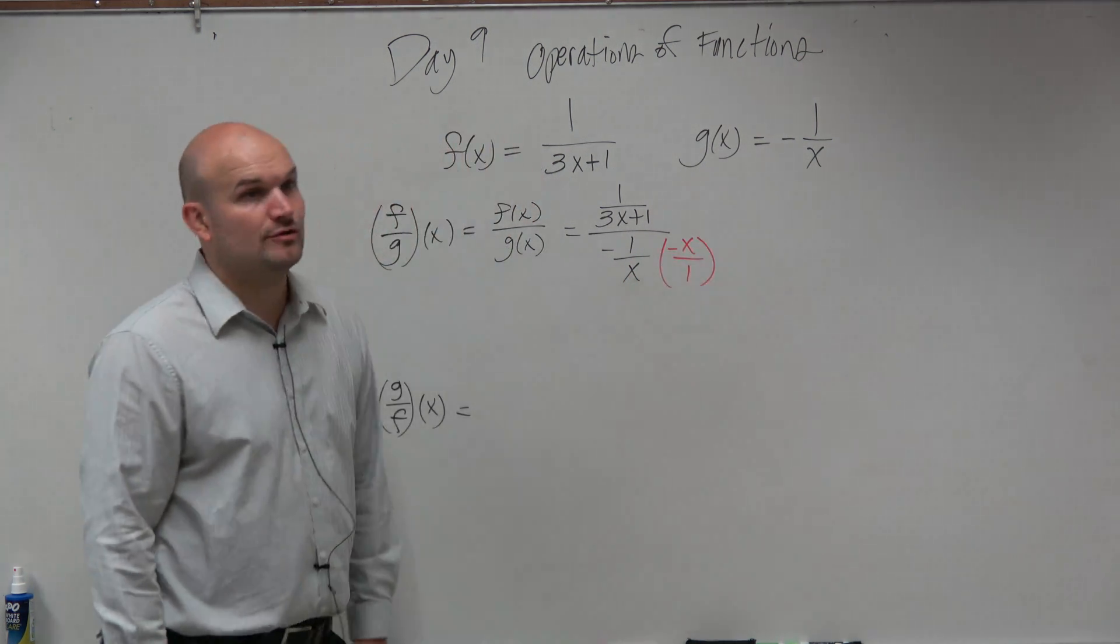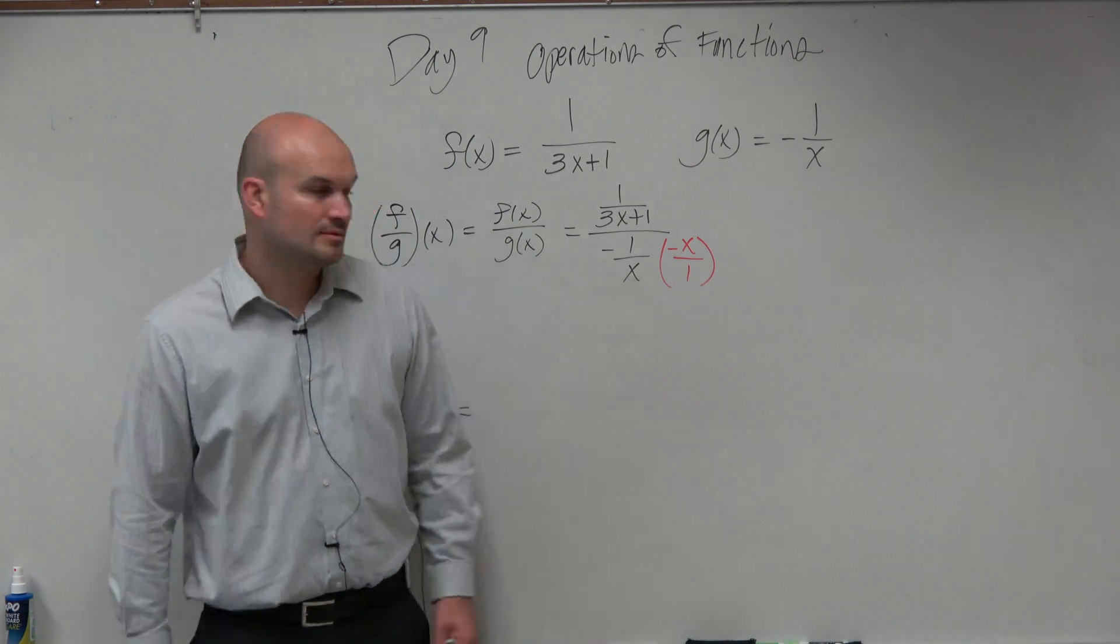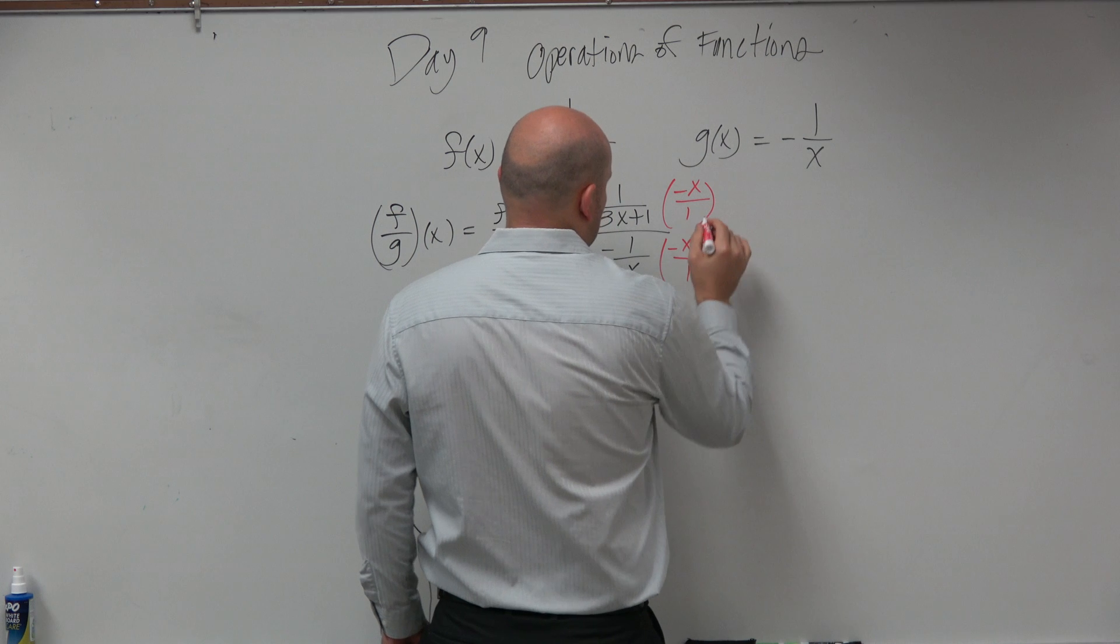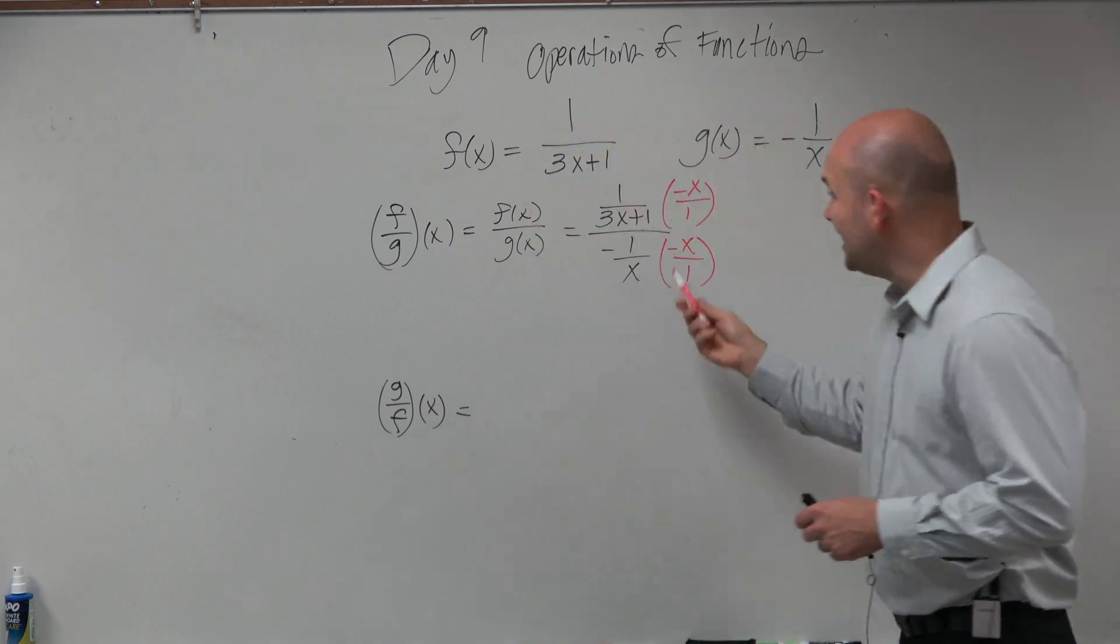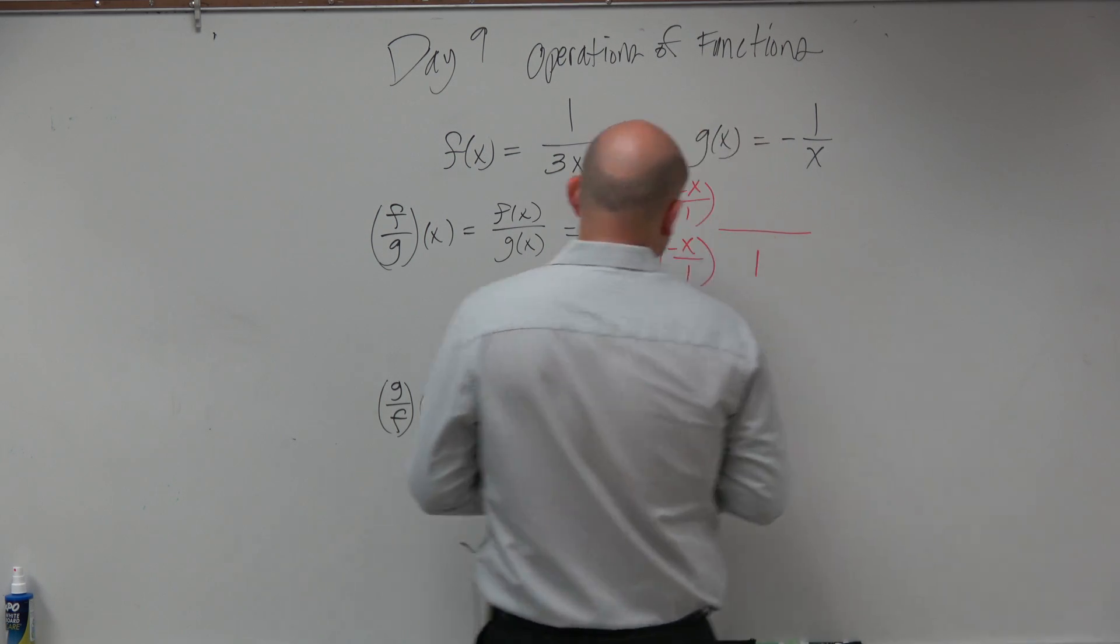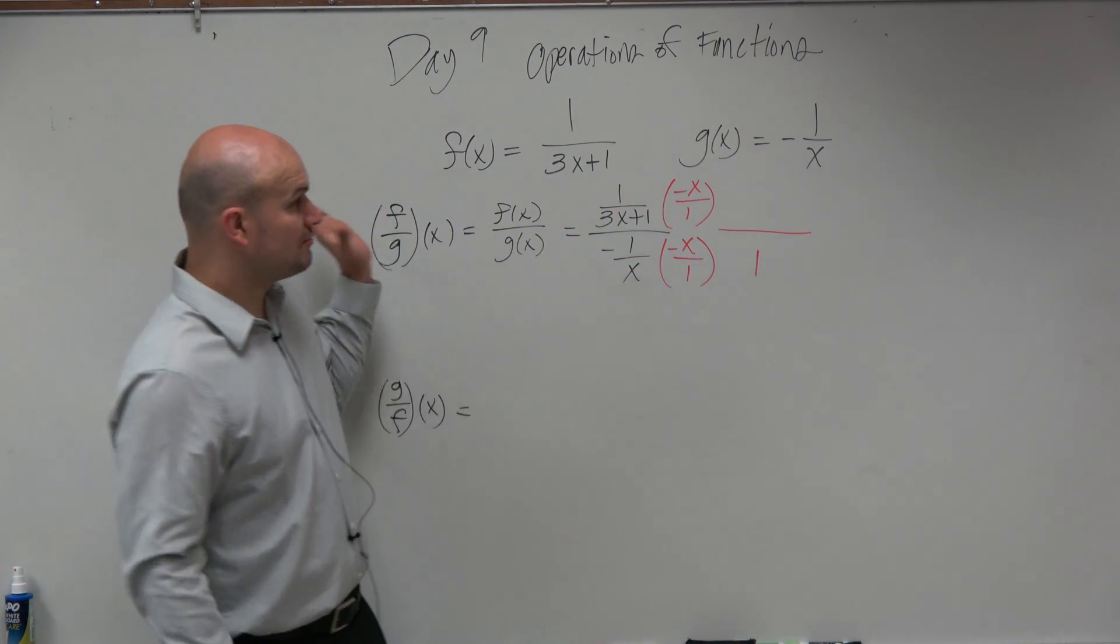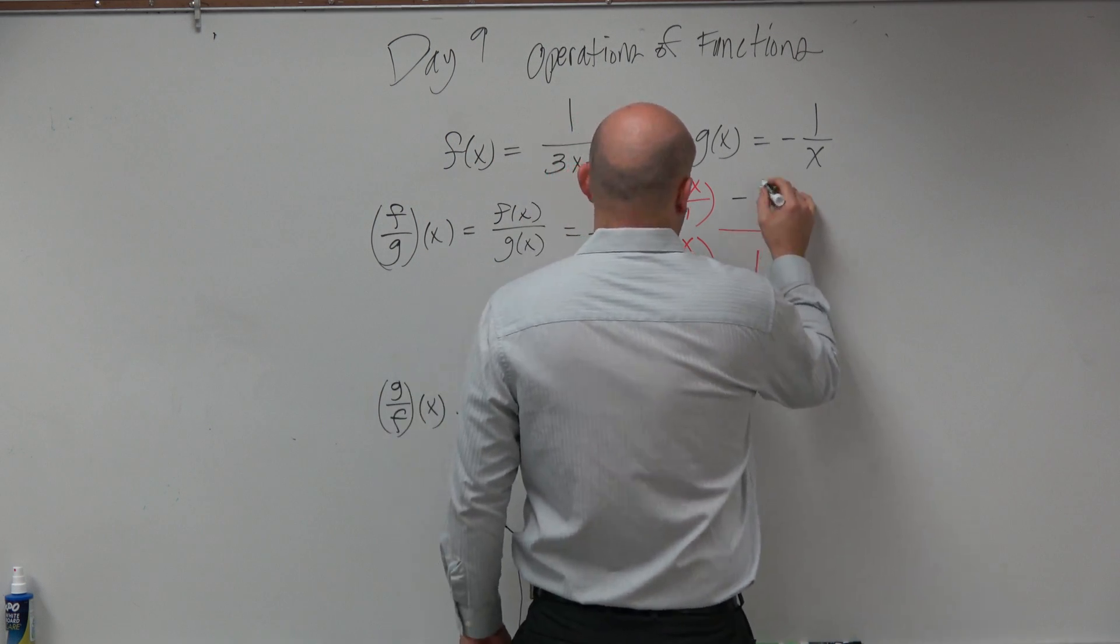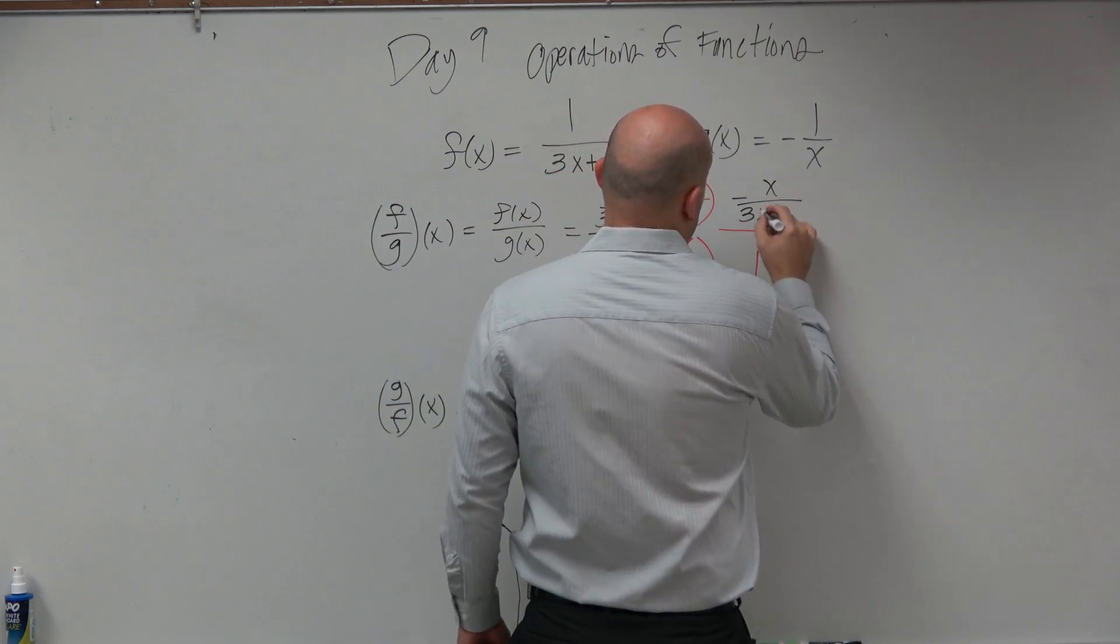But you guys would agree with me that would be the reciprocal of that number, right? And let's multiply the reciprocal over here. Now, again, any number or expression multiply its reciprocal equals 1. Multiplying fractions, we're just multiplying straight across. So therefore, I'm left with negative x over 3x plus 1.